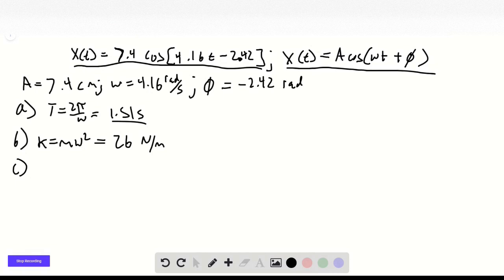The max speed for simple harmonic motion equals omega a, which is 30.8 centimeters per second.